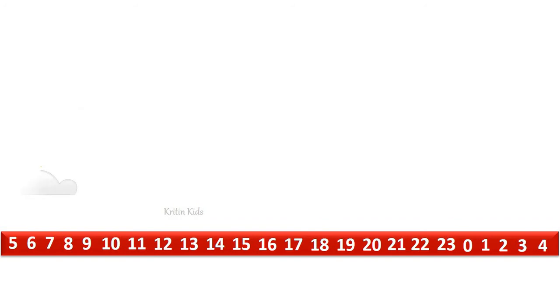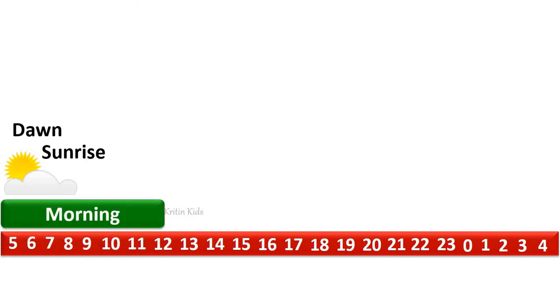Now let's discuss the same thing with the scale. Let's begin the scale with 5 o'clock and so on. We will write all the timing horizontally. Here we can see from 5 o'clock when the sunrise happens. From 5 o'clock to 12 o'clock, we call it as morning, where we can wish as good morning.